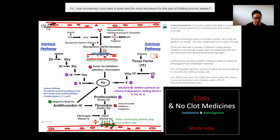A complex system that works is invariably found to have evolved from a simple system that works — that's what I was trying to do when I first put out this clotting process a number of years ago. The blood clotting process is a complex system, as you can see from this chart, yet a child can explain it simply: fall over, scraped knee, and a scab is formed. There are a number of different clotting factors, receptors, and enzymes in play when blood clots, but who can remember them all?